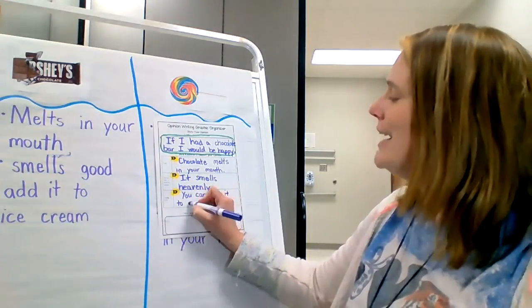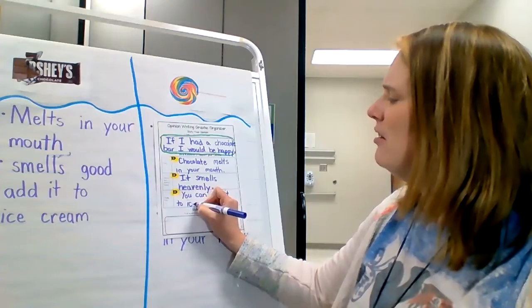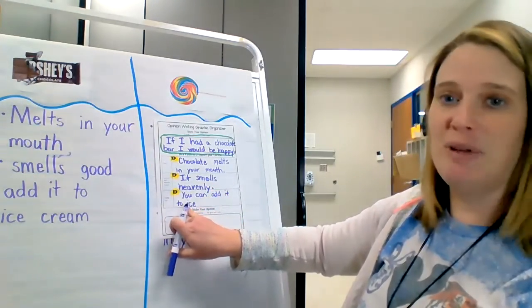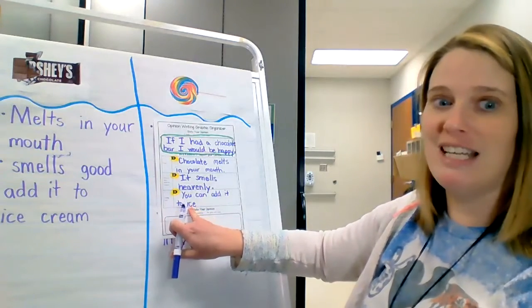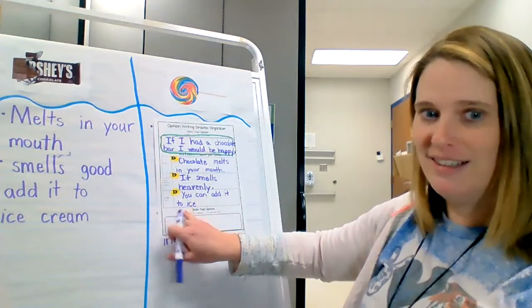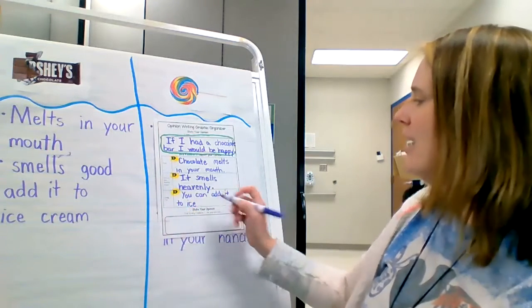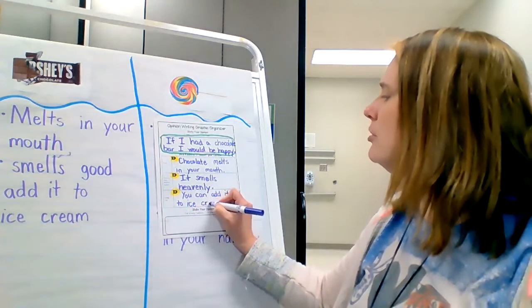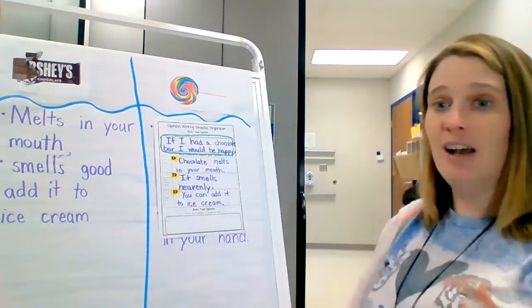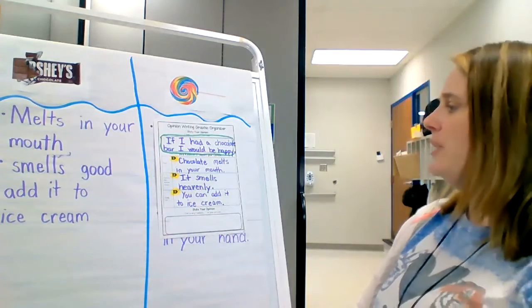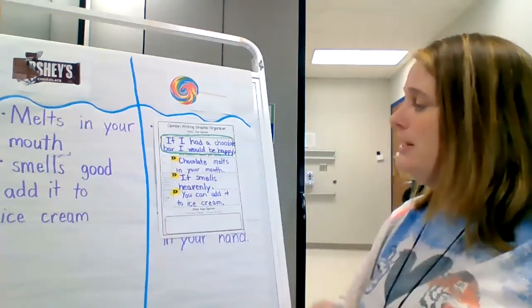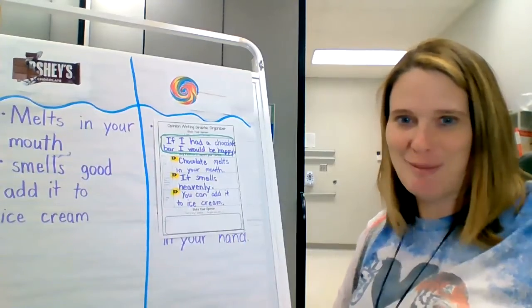That's kind of a hard word to spell. Look at that, that E kicks the I and makes it say its name, and then it's a soft C so it's not 'ick,' it's ice. Ice cream. And there's a vowel team, oh my gosh, all that stuff, it's just all over isn't it. Alright, that's all you need to do today, your three details: one, two, three. We'll finish up with our conclusion tomorrow.